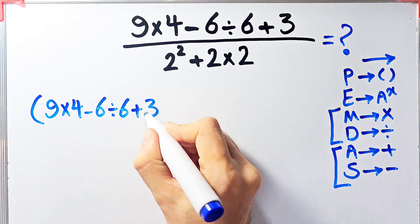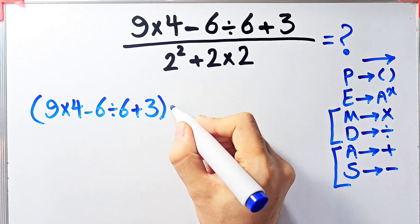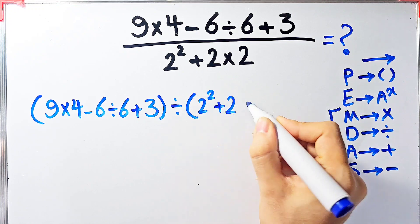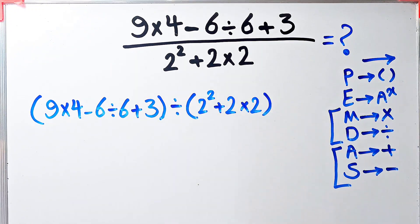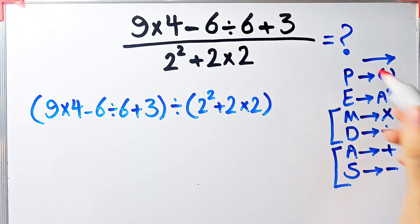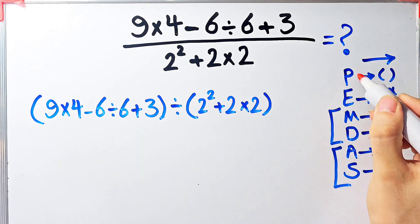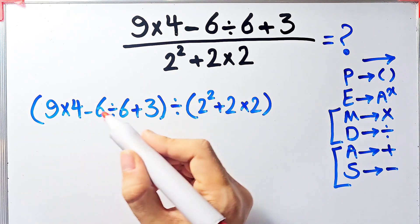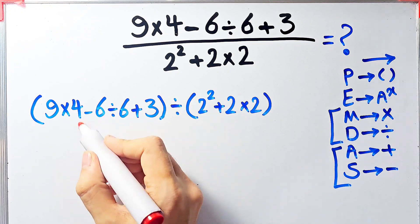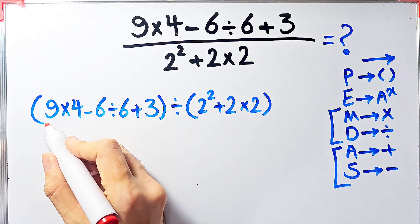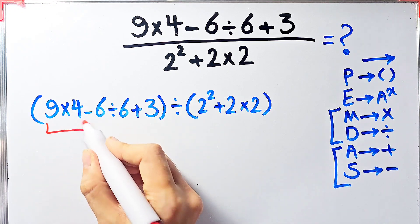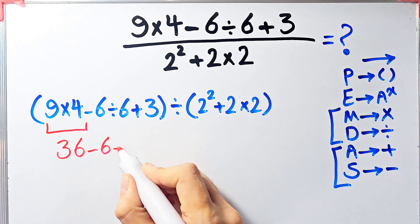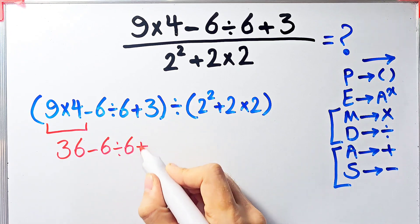We have 9 times 4 minus 6 divided by 6, then plus 3 in the numerator, and in the denominator we have 2 to the power of 2 plus 2 times 2. According to the PEMDAS rule, first we simplify the parentheses. Inside the first parentheses we have multiplication, subtraction, division, and addition. First we simplify the multiplication: 9 times 4 equals 36, giving us 36 minus 6 divided by 6, then plus 3.